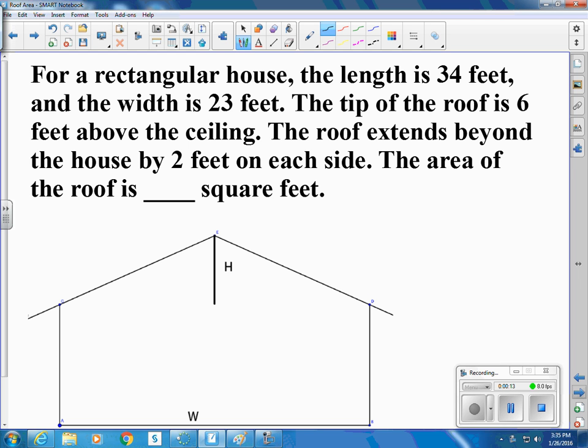So the house is rectangular, the length is 34 feet, the width is 23. And so in this side view of the house, we can write the width is 23, the tip of the roof is 6 feet above the ceiling. So this height right there from the ceiling up is 6 feet.